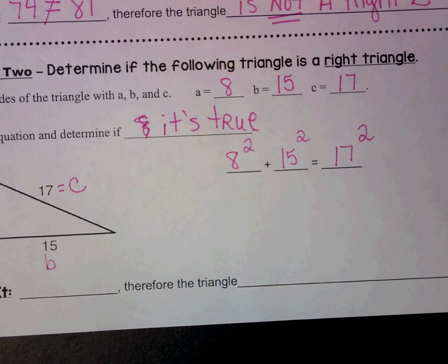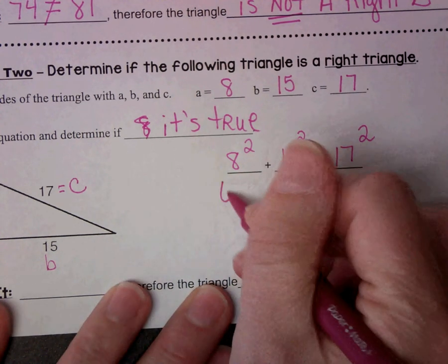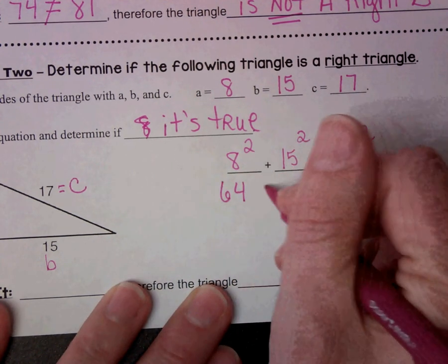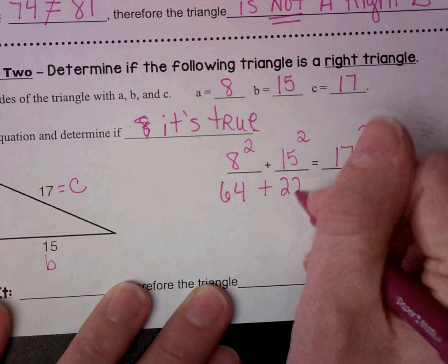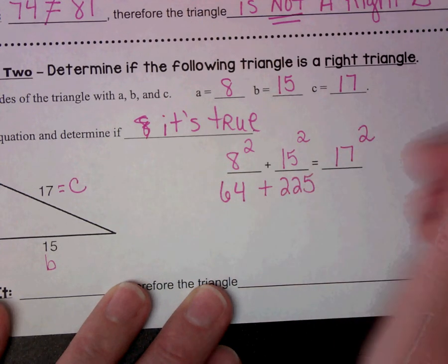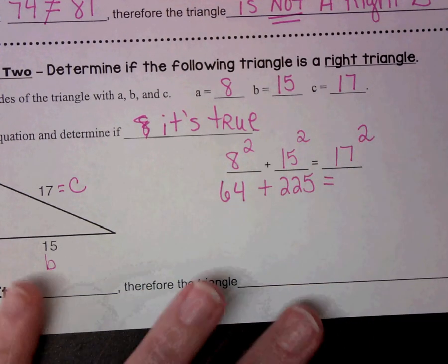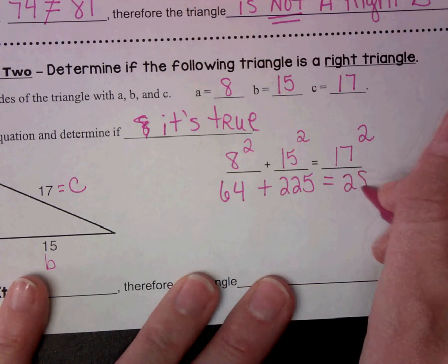So square those numbers with your calculator real quick. Check them out. Make sure you know how to use your buttons on your calculator. This would be 64 plus 225. Check me because I'm not using my calculator right now. 17 squared is 289.